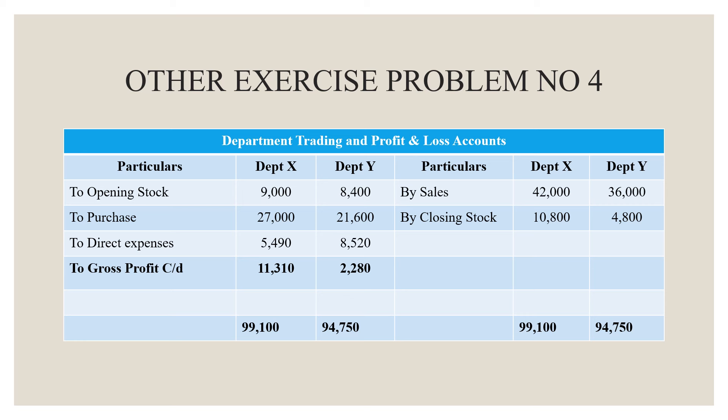Here we have to prepare the Departmental Trading and Profit and Loss Account. In the trading account, the first item is Opening Stock: 9,000 for Department X and 8,400 for Department Y. Purchases are 27,000 for Department X and 21,600 for Department Y. Direct Expenses are 5,490 for Department X and 8,520 for Department Y.